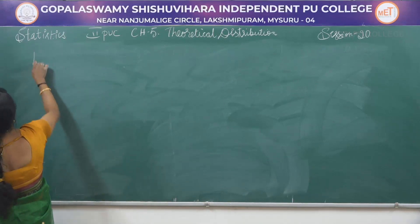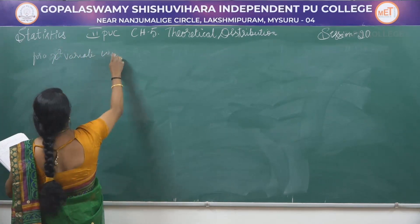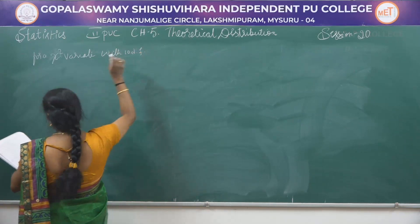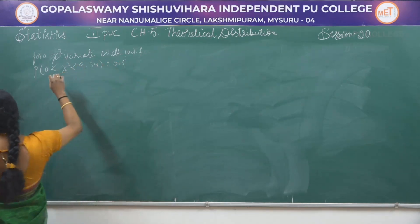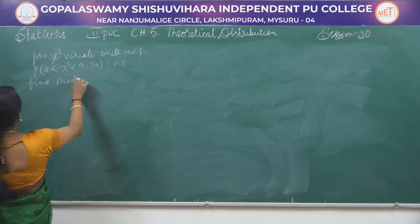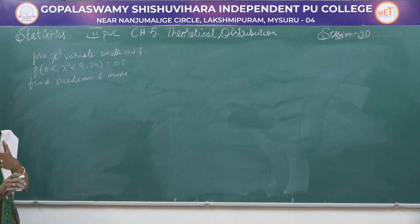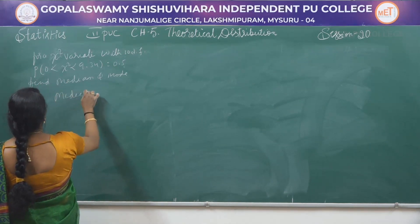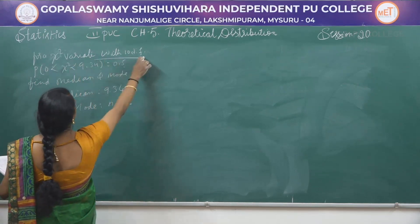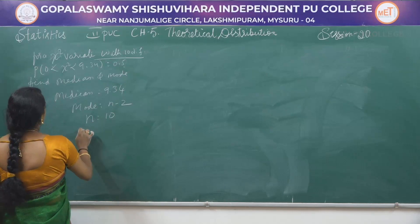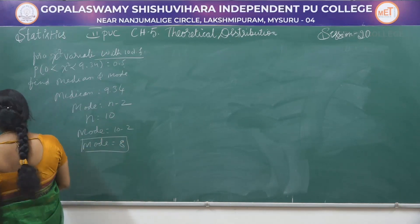Problem: For a chi-square variate with 10 degrees of freedom, if P(0 < χ² < 9.34) = 0.5, find median and mode. Since probability = 0.5, median = 9.34. Mode = n − 2 = 10 − 2 = 8.